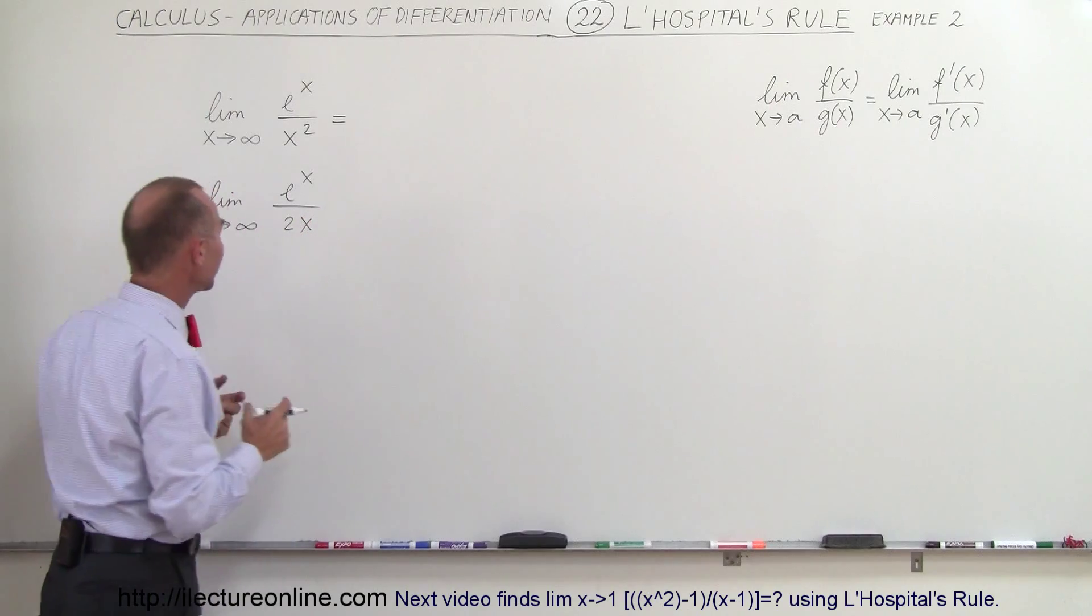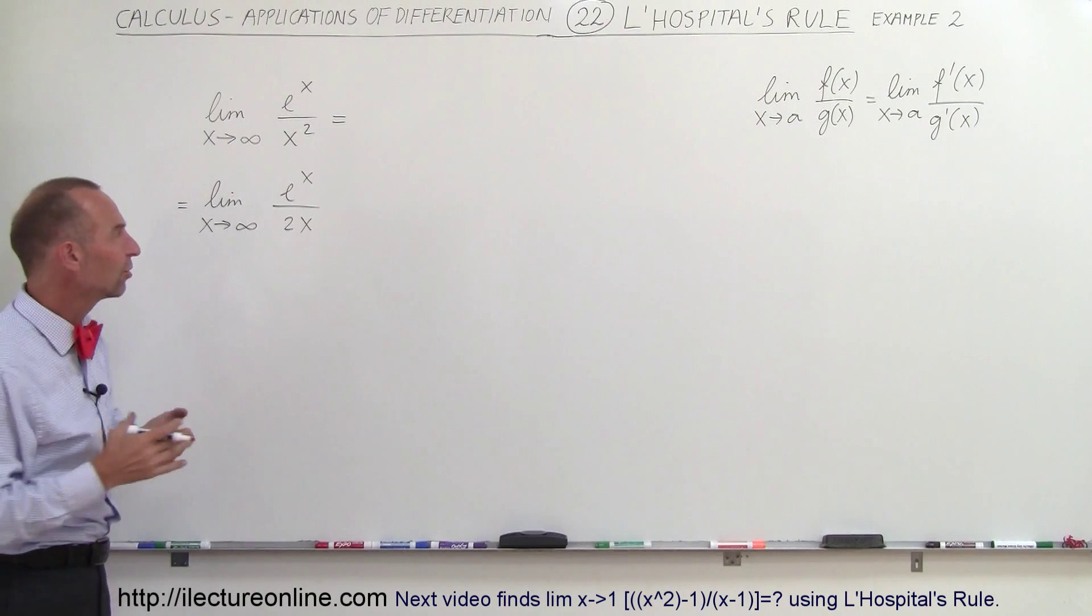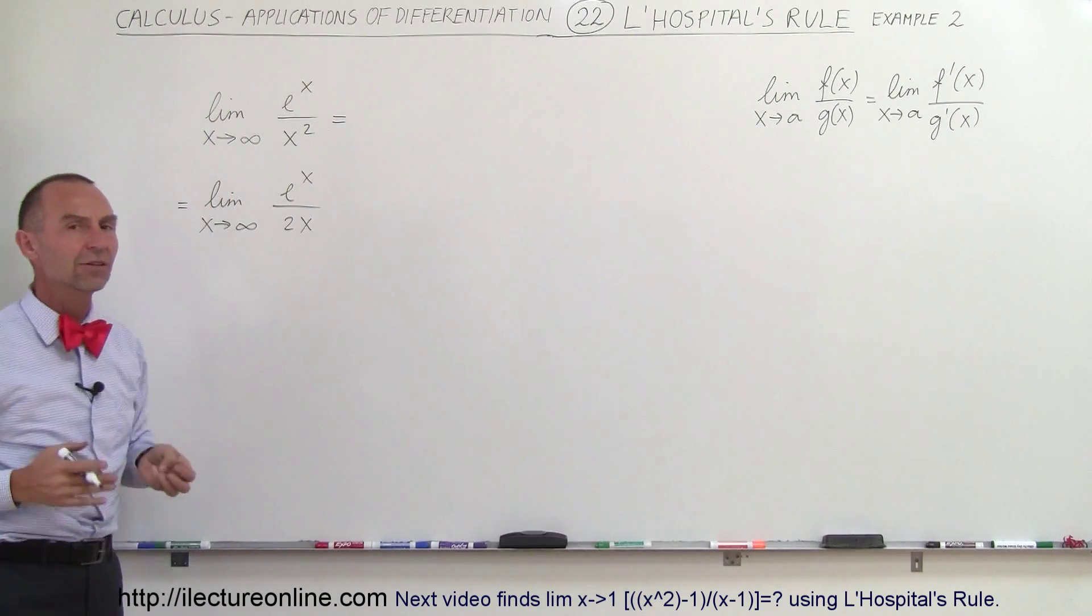divided by the derivative here would be 2x and now if we take the limit if we let x go to infinity we still have a problem. We still have an infinity divided by infinity situation.